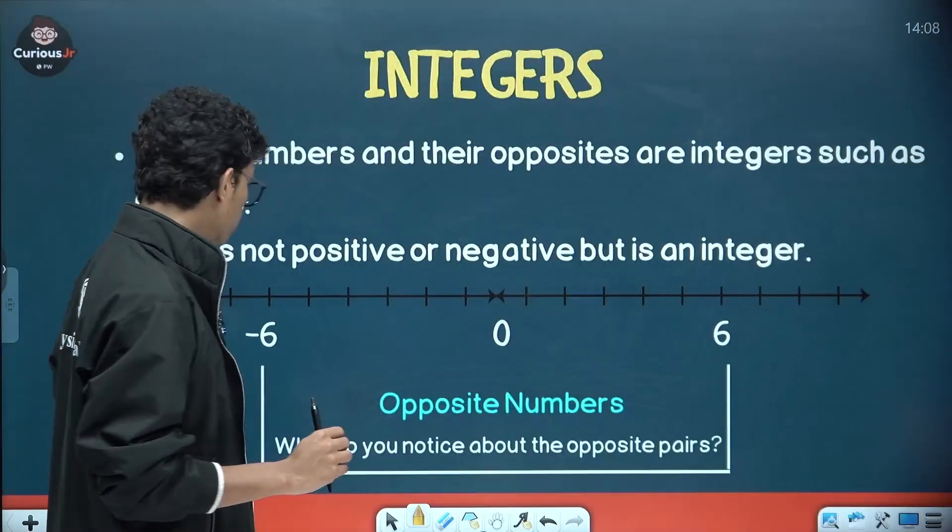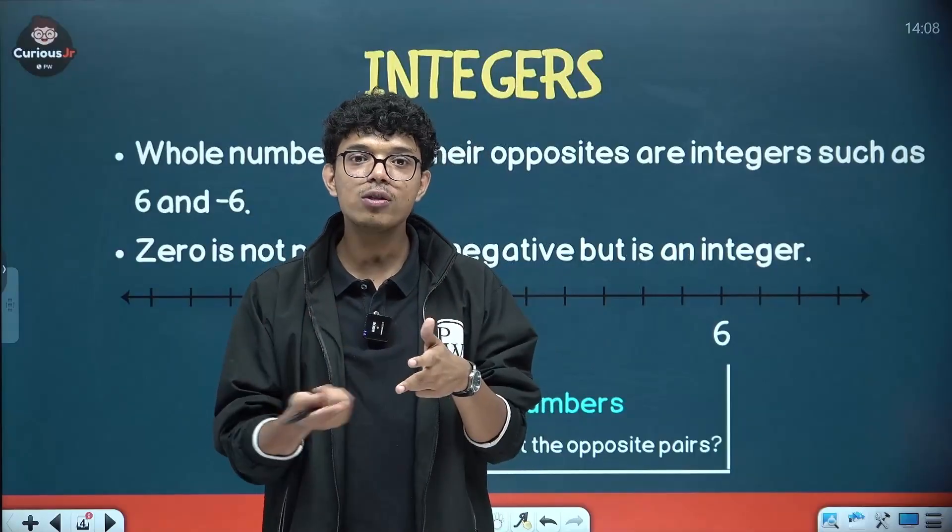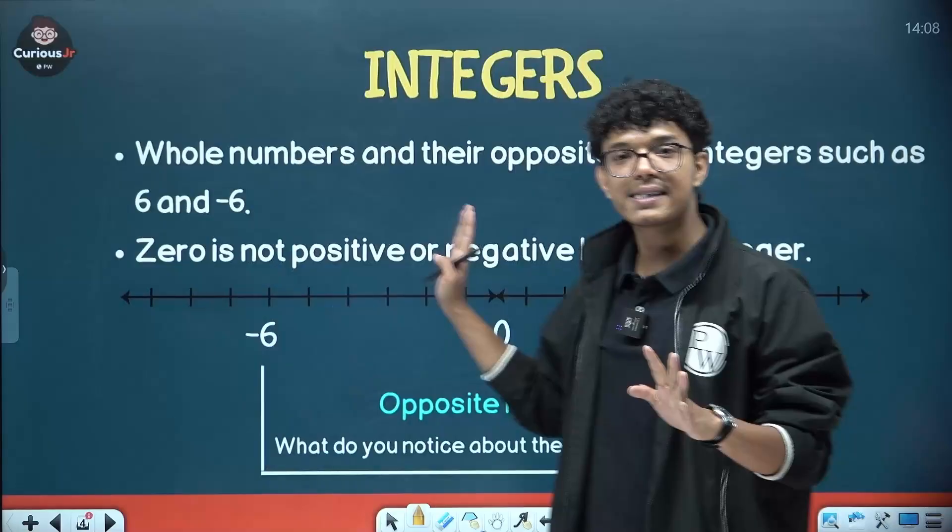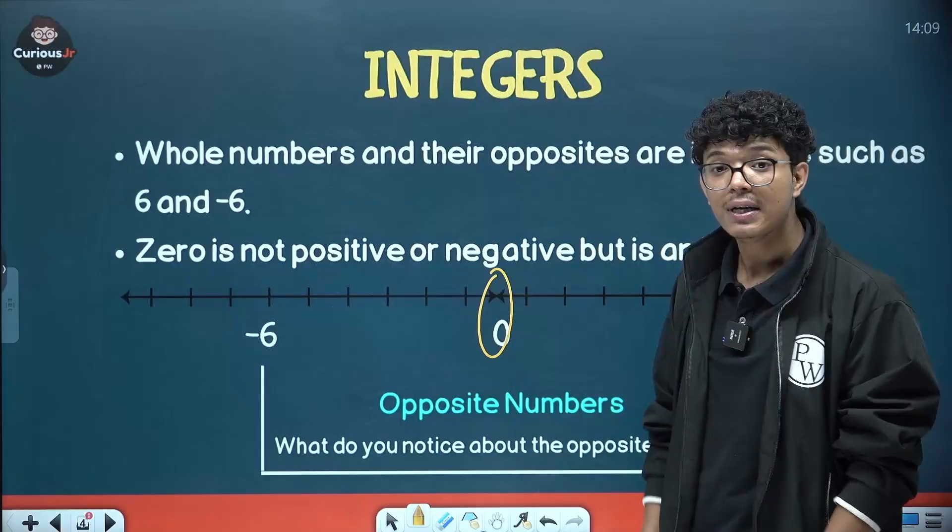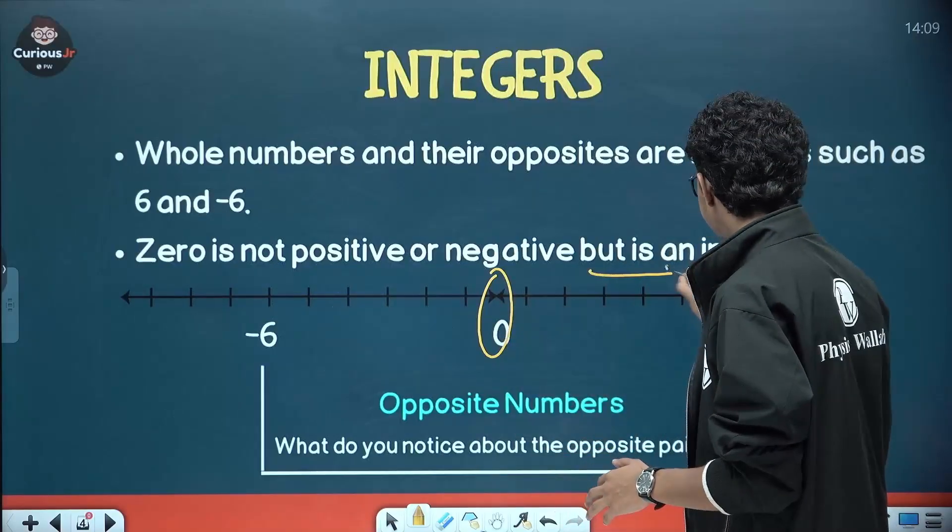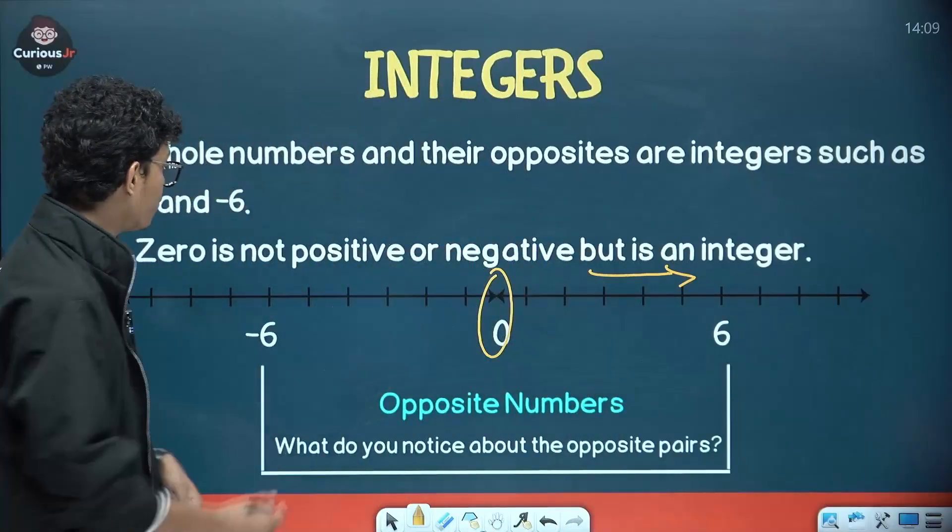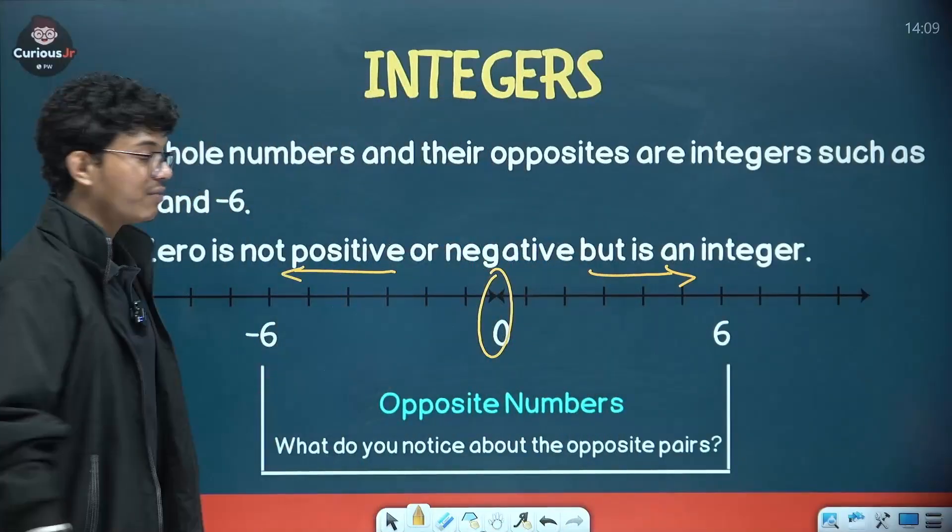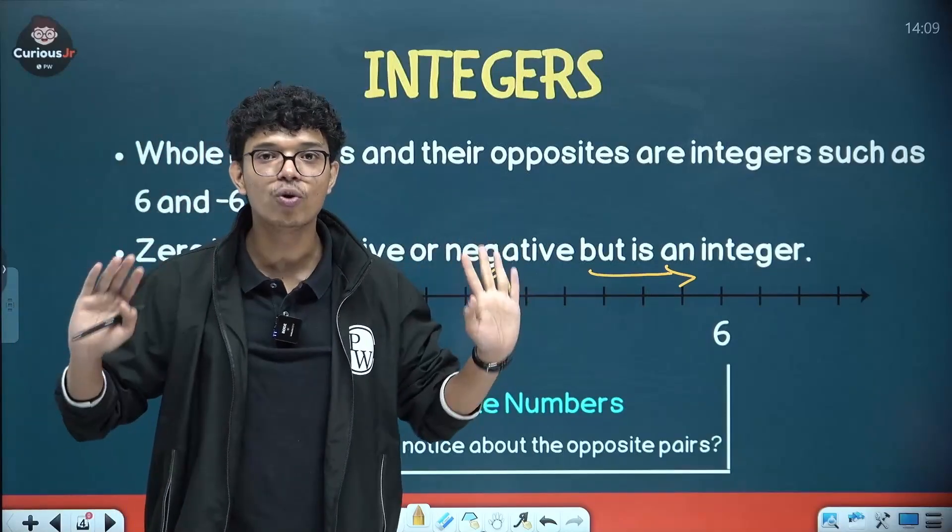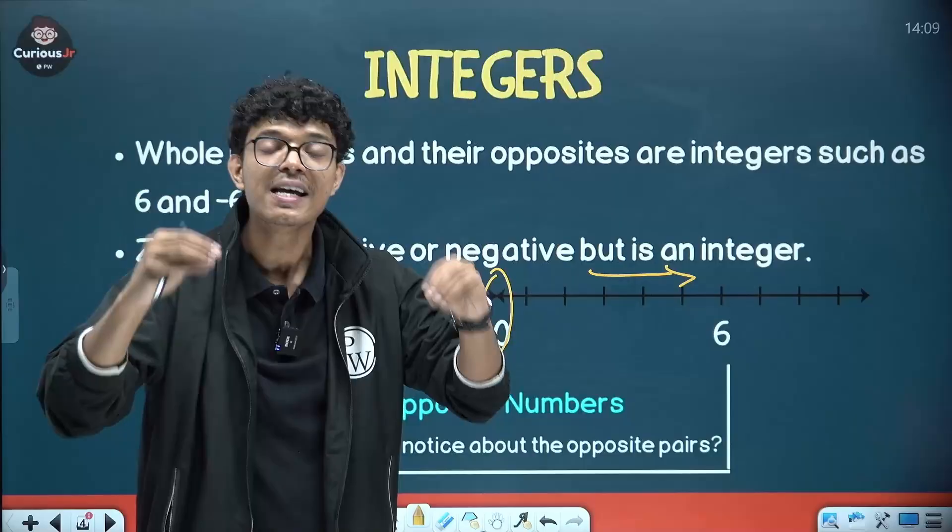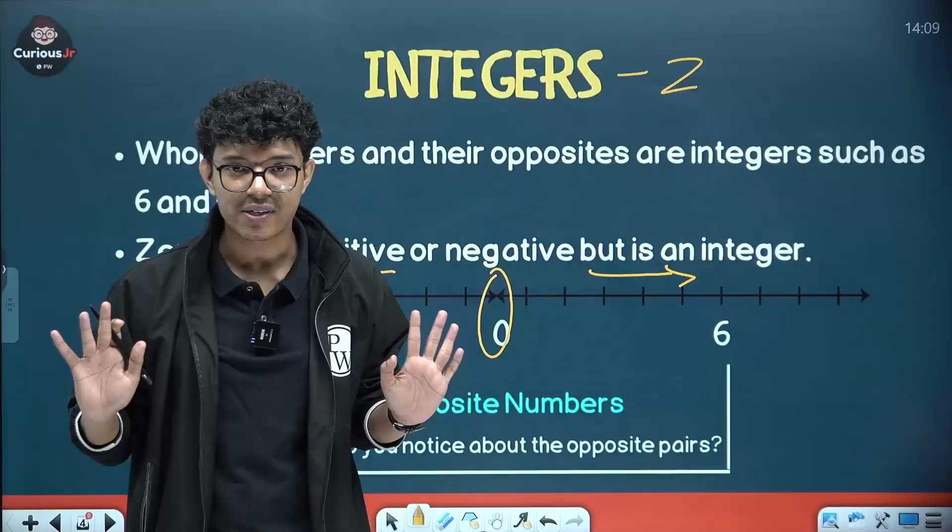Toh integers me kya hote hai bachcho? Zero raheta hai and humare counting numbers raheta hai and also the negative numbers raheta hai. Like you look at this number line. And in the number line in the middle we are having a 0 and towards the right side we are having positive numbers and towards the left side we are having negative numbers. Very simple. Right side pe positive, left side pe negative, bich mein zero and this is nothing but integers and that we will represent with a letter Z. Z se represent karte hai.